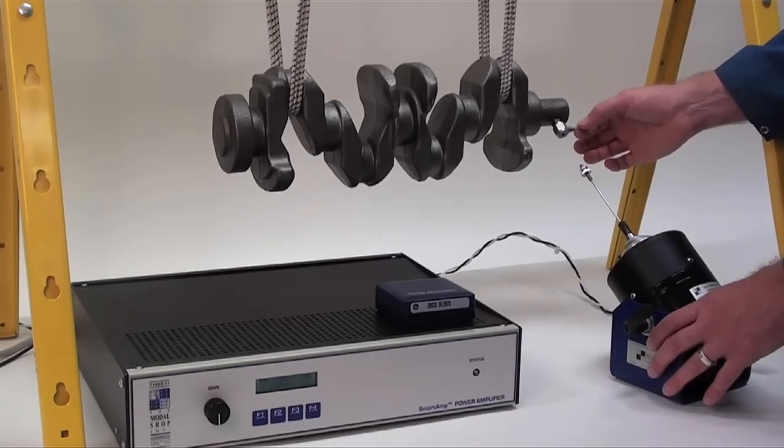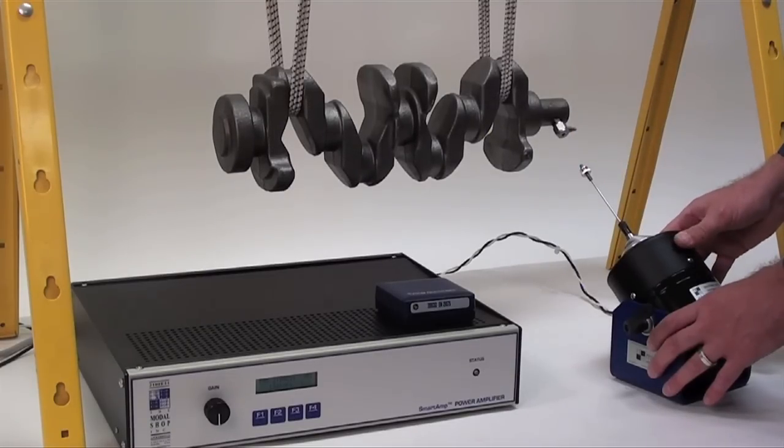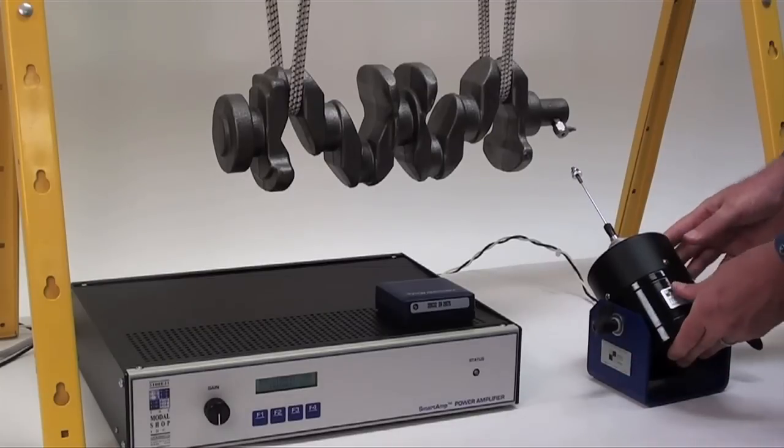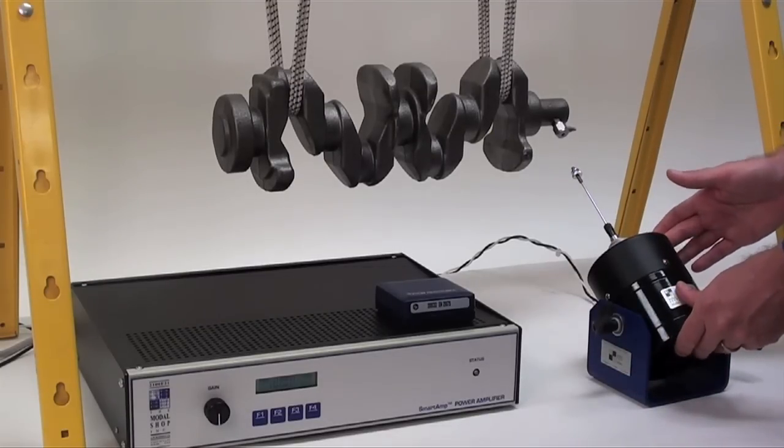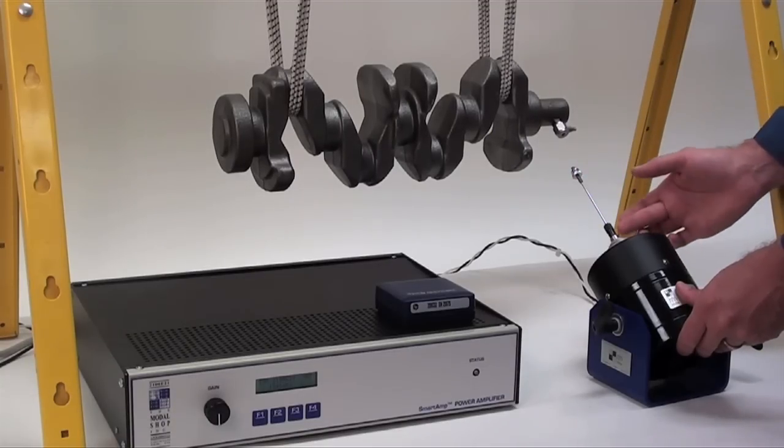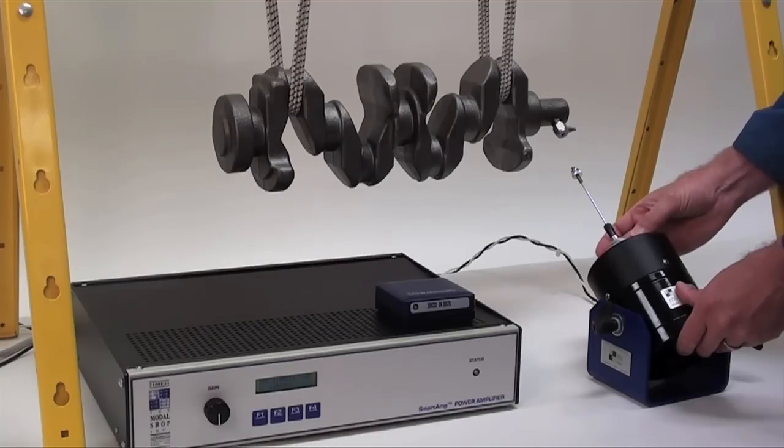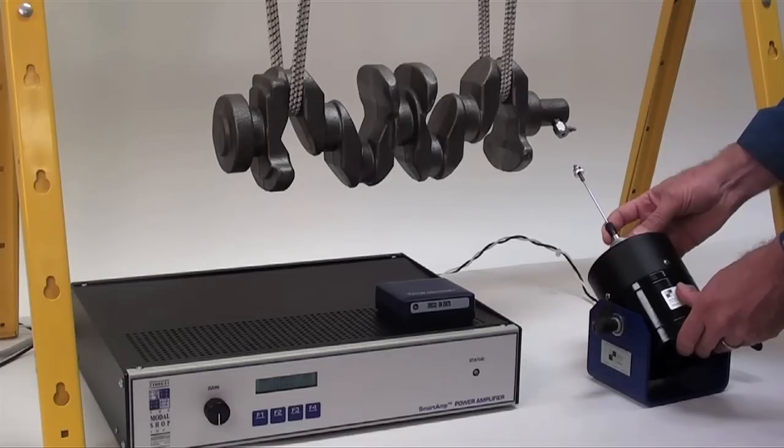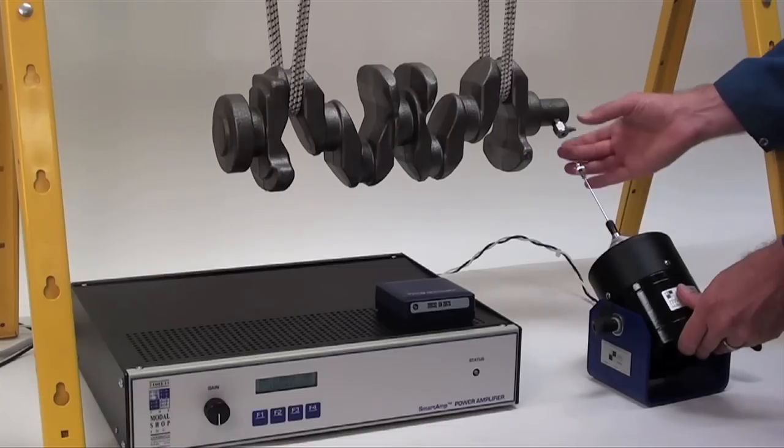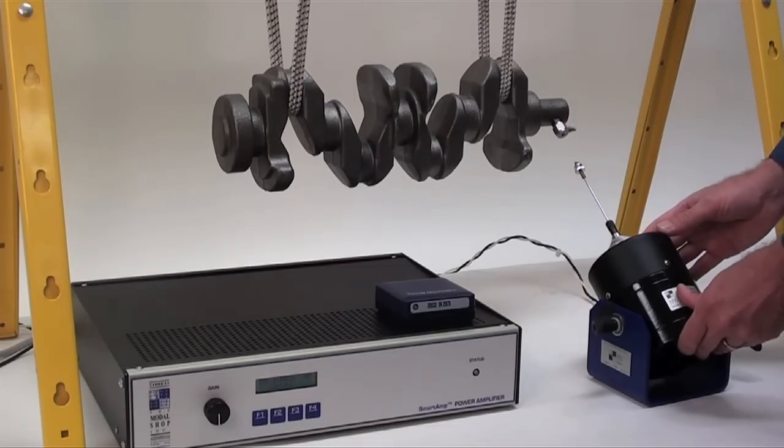And that would add errors to the test. So for that reason, we want to get perfect alignment. For another reason, we want to protect the armature of the shaker. If we have significant side force or moment on the stinger, we may actually damage the support structure inside of the shaker as well. So for those reasons, we want to maintain nearly perfect alignment between the stinger and the load cell.